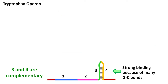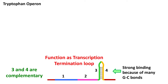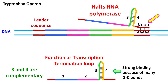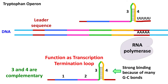The loop structure formed between sequence 3 and sequence 4 functions as a transcription termination loop. Remember, after sequence 4, there is a stretch of U. So when the RNA polymerase halts due to the loop structure between sequence 3 and 4, the AU bonds between the template DNA and the newly formed RNA are weak. As a result, the RNA polymerase is released from the DNA and the process of transcription terminates.